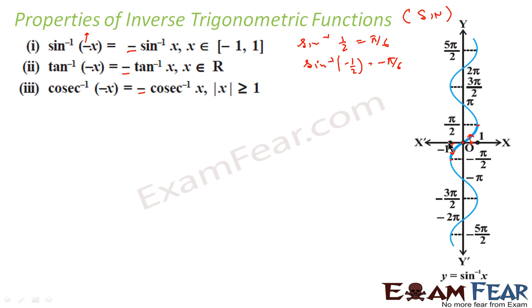To generalize: sin⁻¹(−x) = −sin⁻¹(x). Similarly for tan and cosec. Since the center is (0, 0), taking a negative input just adds a negative to the output. So sin⁻¹(−x) is simply −sin⁻¹(x).